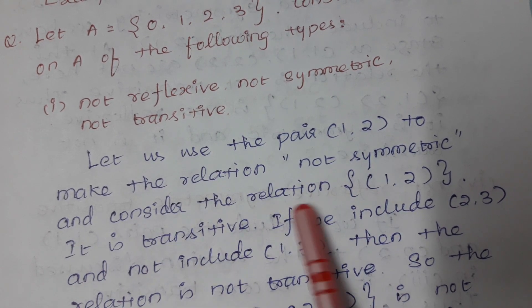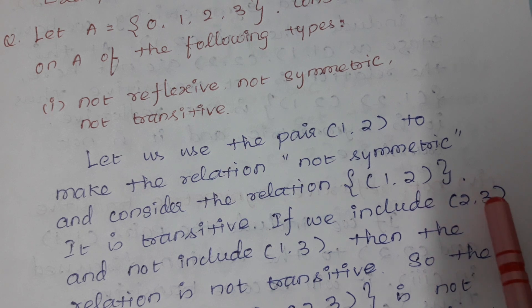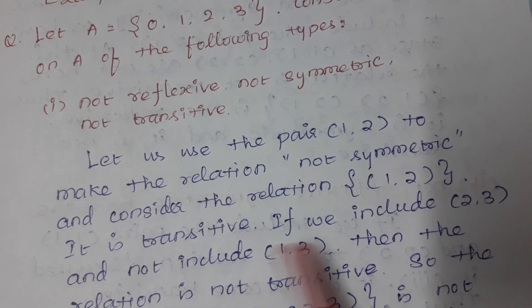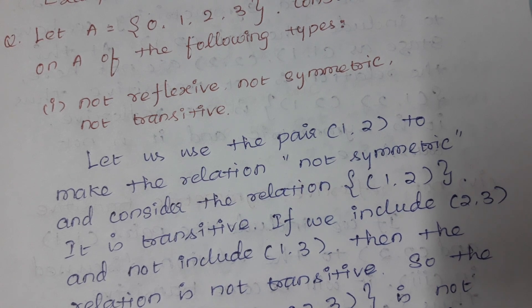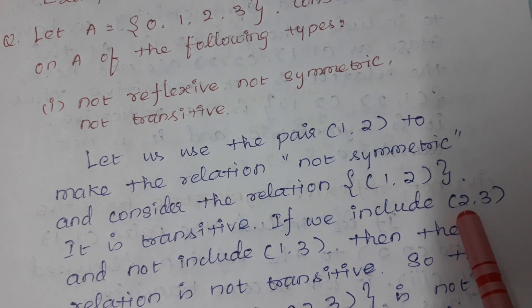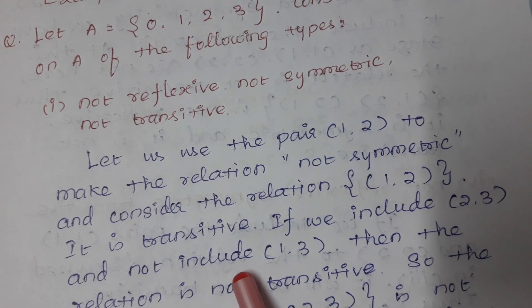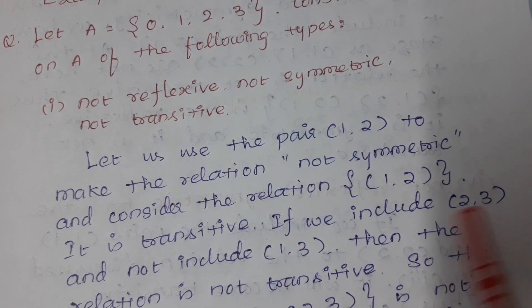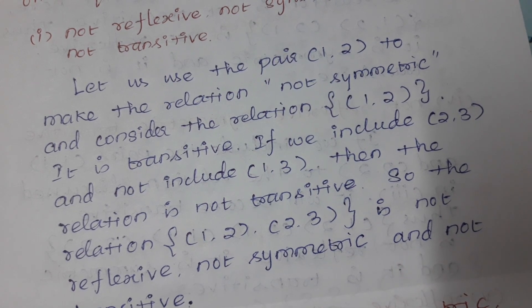If we include (2,3) and do not include (1,3), then the relation is not transitive. So the relation {(1,2),(2,3)} is not reflexive, not symmetric, and not transitive.